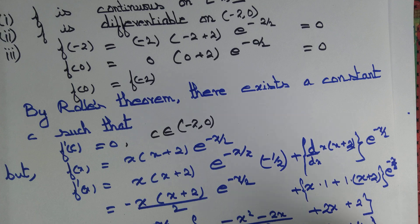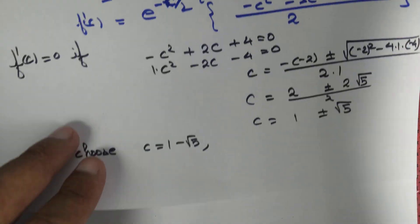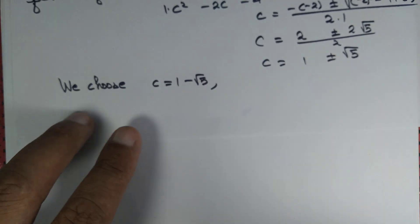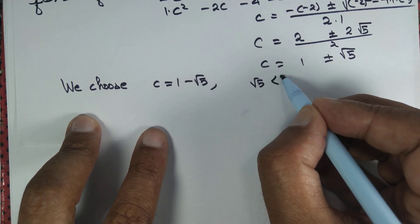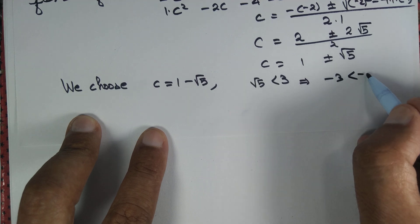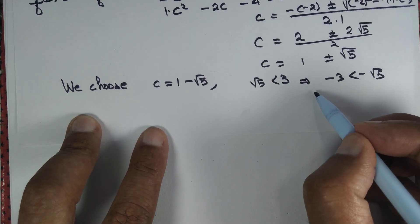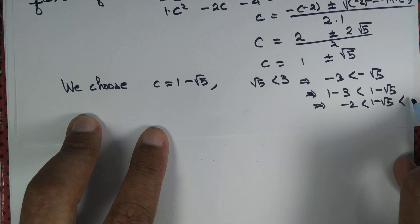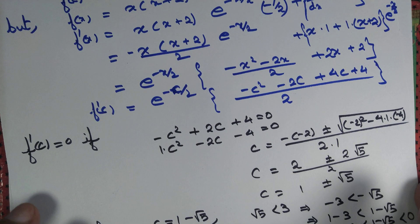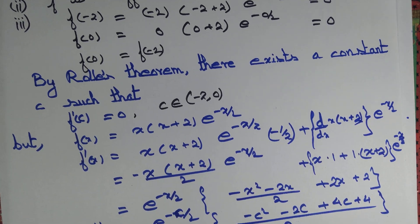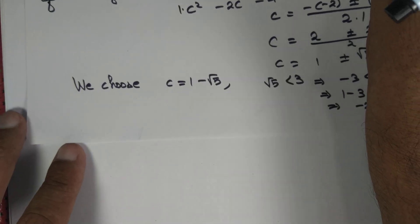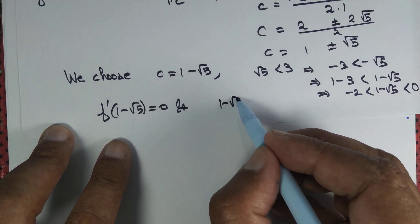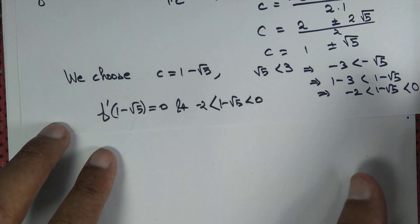Is c = 1 - √5 negative? Yes, since √5 is greater than 1, so 1 - √5 is a negative quantity. But is it greater than -2? Note that √5 < 3, so -3 < -√5, and adding 1 to both sides gives -2 < 1 - √5. Of course 1 - √5 < 0 as well. So we have determined a constant c = 1 - √5 lying in (-2, 0) such that f'(c) = 0, and thus Rolle's theorem is verified.